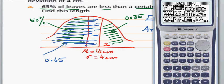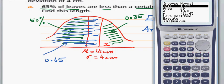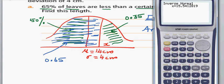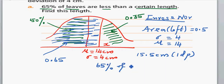Go to stats, distribution, normal, inverse normal. You can see it asks what tail you want — left or right. Enter left tail area = 0.65, standard deviation = 4, and mean = 14. The answer the calculator gives is 15.54 cm, so rounding to 1 decimal place the answer is 15.5 cm. That means 65% of the leaves are less than 15.5 cm.